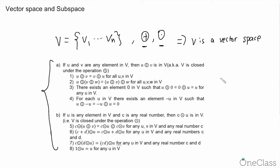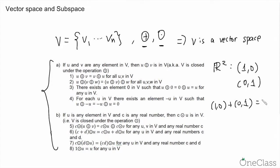One example of a vector space is R². Let's check condition a and condition b for R². If we have two vectors from R², say (1, 0) and (0, 1), condition a states that if u and v are any elements in v, then u plus v is in v. So (1, 0) and (0, 1) are elements of R², and (1, 0) plus (0, 1) equals (1, 1), which is certainly in R². This satisfies condition a, since the addition of two vectors in R² is also in R². This is called closed under addition.